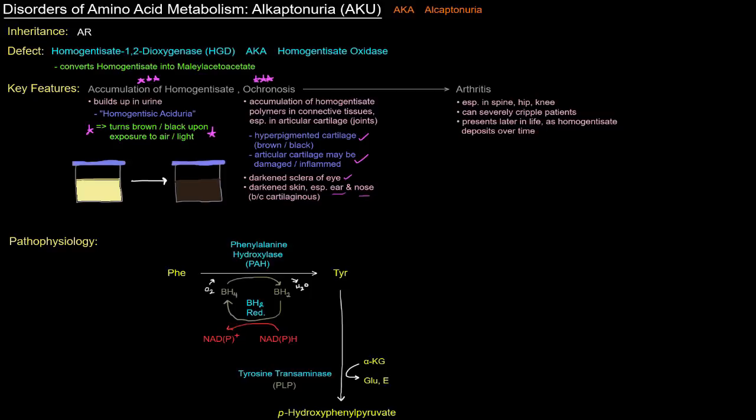This damaged cartilage can lead to an early arthritis. And I say early, it might come up around 30 to 40 or so years of age, which is pretty early as far as arthritis goes, especially in the spine, hip, and knee, and it can severely cripple patients. It will develop over time as the homogentisate deposits and builds up.